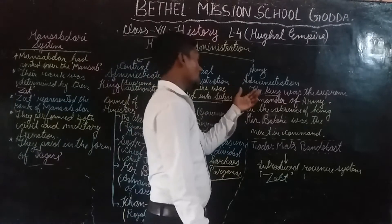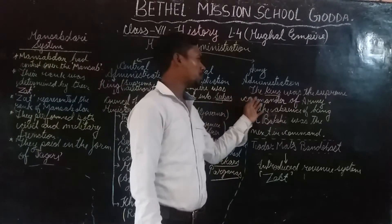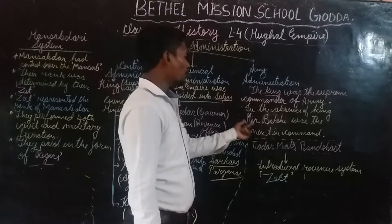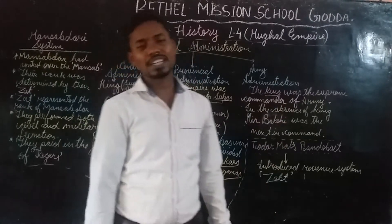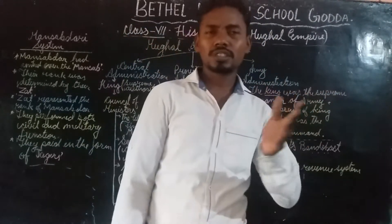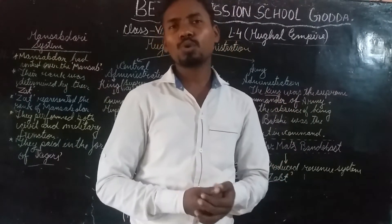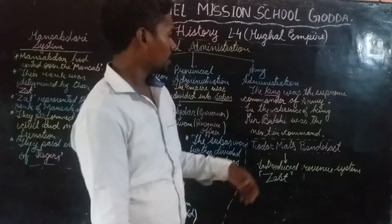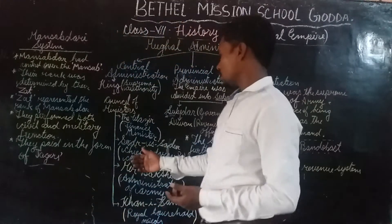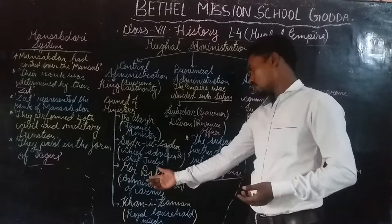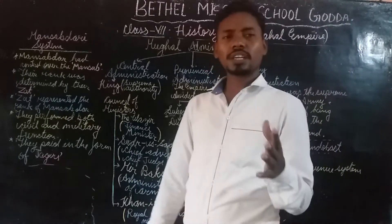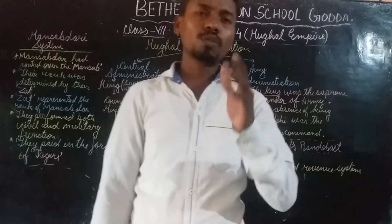Now we move on to the army administration. In the army administration, the king was the supreme commander of the army. In the absence of the king, Mir Bakshi was the next in command. If the king did not have time to take a decision or was absent, any decision had to be made by Mir Bakshi. He was the administration in charge of the army, and after the king, the only person in charge of the army was Mir Bakshi.